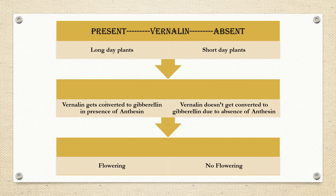Now we will see how this is happening. This is the key section which depicts the main action of vernalization. Vernalin gets converted to gibberellin in the presence of anthocin in long day plants, which leads to flowering.